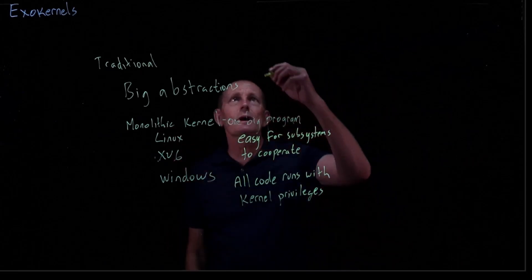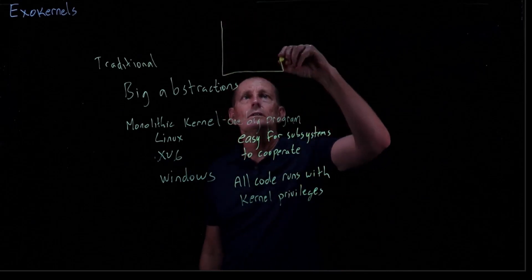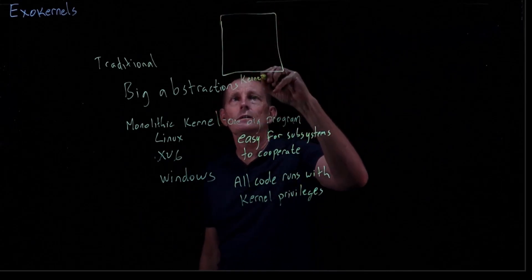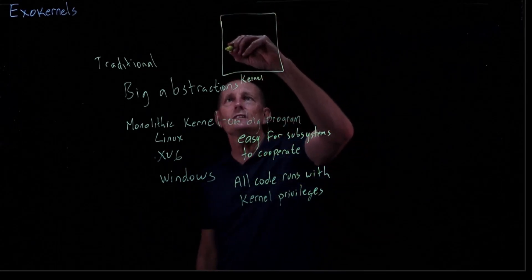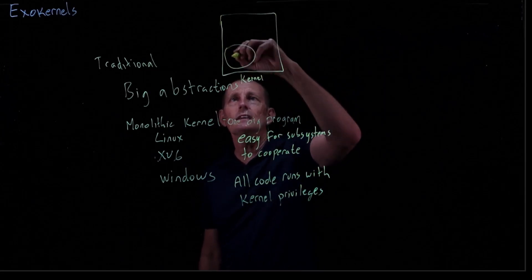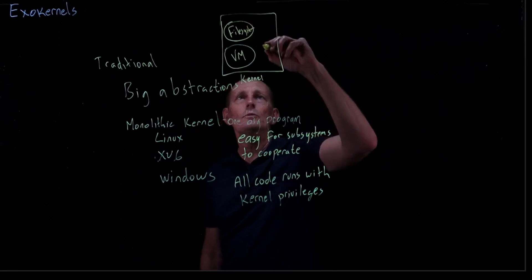So we've got this monolithic kernel approach, where we've got the kernel and various subsystems within it — for example, VM, file system, and processes.